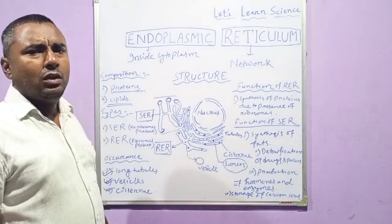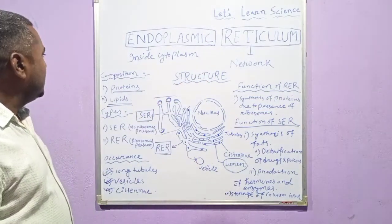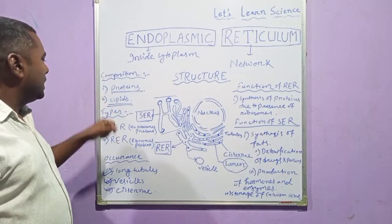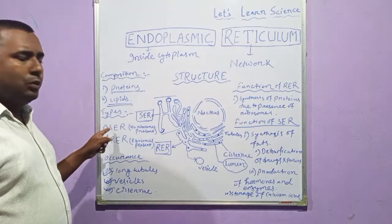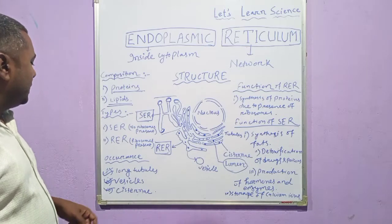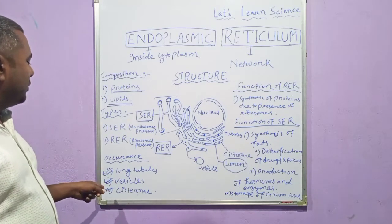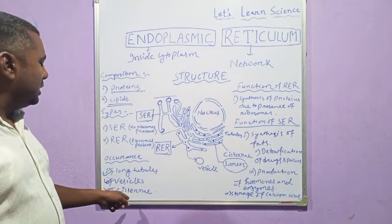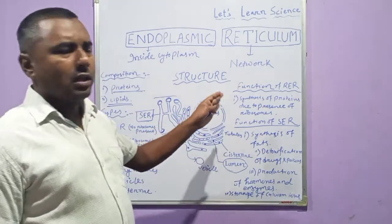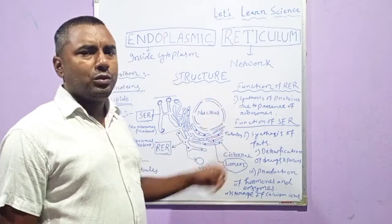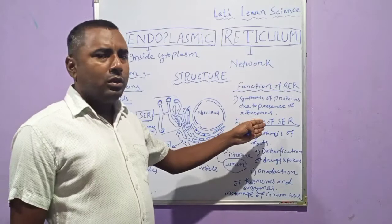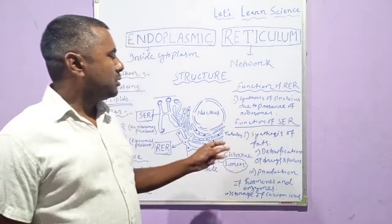Next, the composition: it is made up of proteins and lipids. Then the types — there are two types: Smooth Endoplasmic Reticulum and Rough Endoplasmic Reticulum. Then the function of Rough Endoplasmic Reticulum: it is associated with the synthesis of protein. And the function of Smooth Endoplasmic Reticulum: it is for the synthesis of fats.